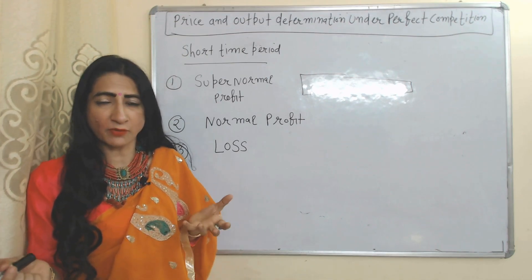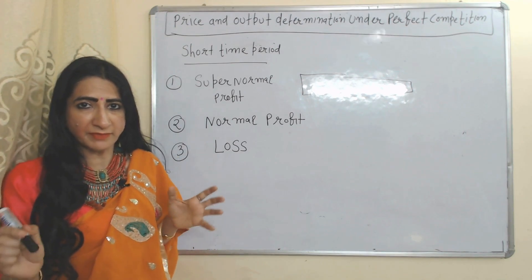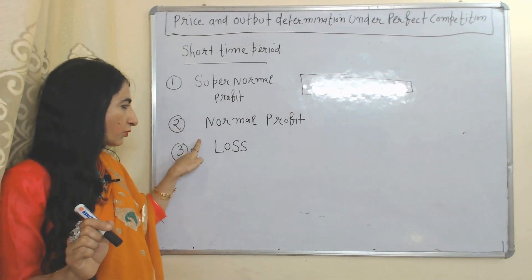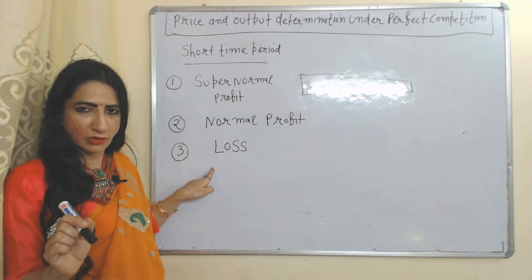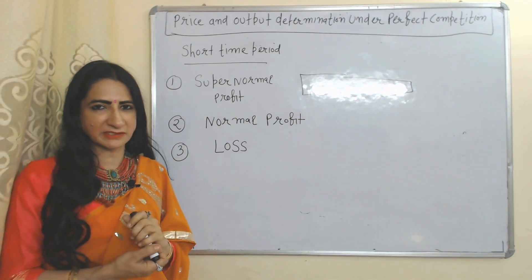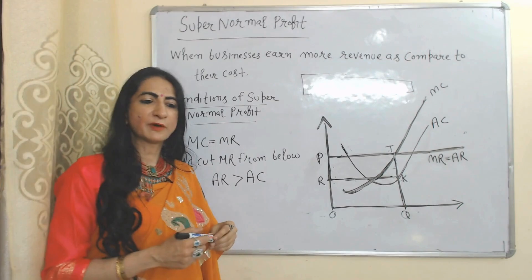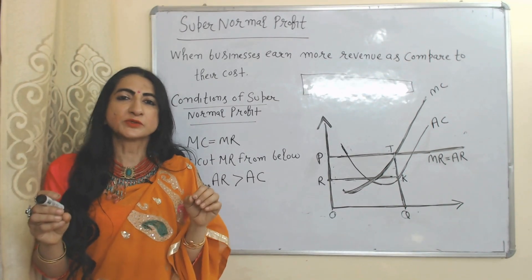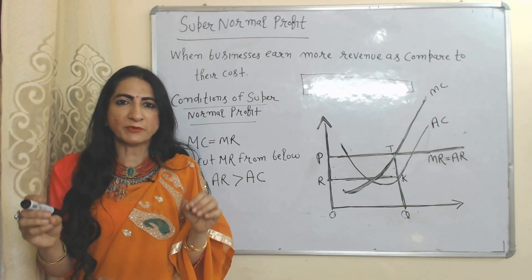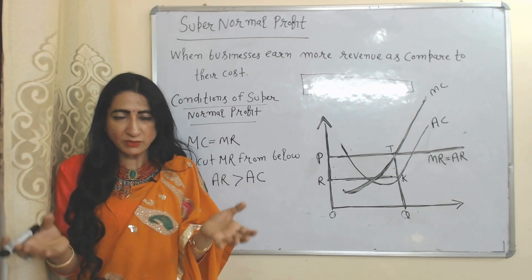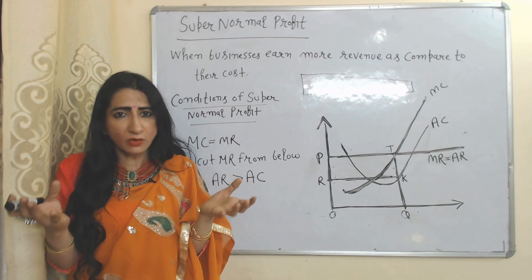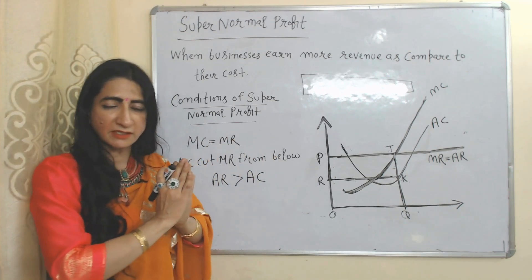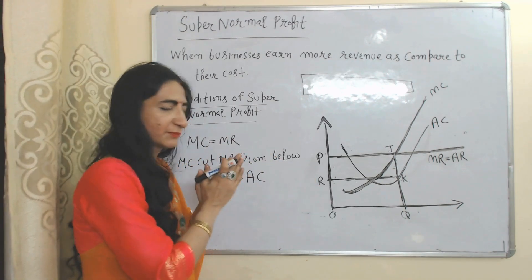During a short time period under perfect competition, a firm mainly faces three kinds of conditions: super normal profit, normal profit, and loss. First of all we will see super normal profit. Super normal profit means when our revenue is more than cost.